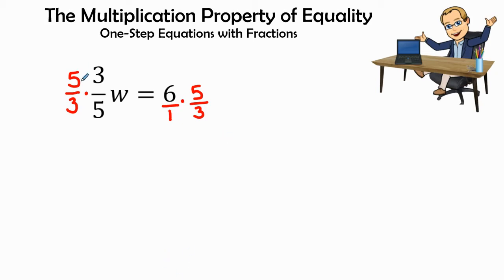So now I can do one of two things. I can multiply across: 5 times 3 is 15, and 3 times 5 is 15. So 15 over 15 is equal to 1. Therefore, I'll have one W, and I would have my variable by itself.